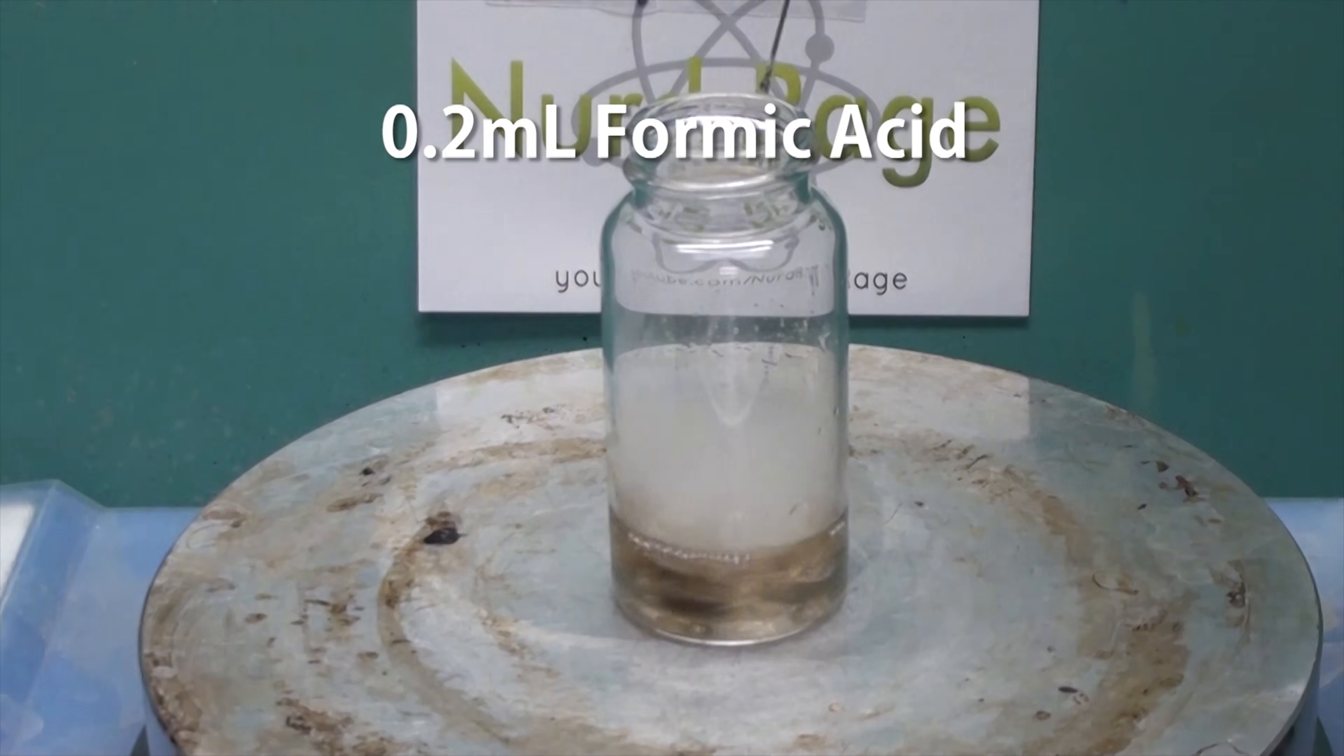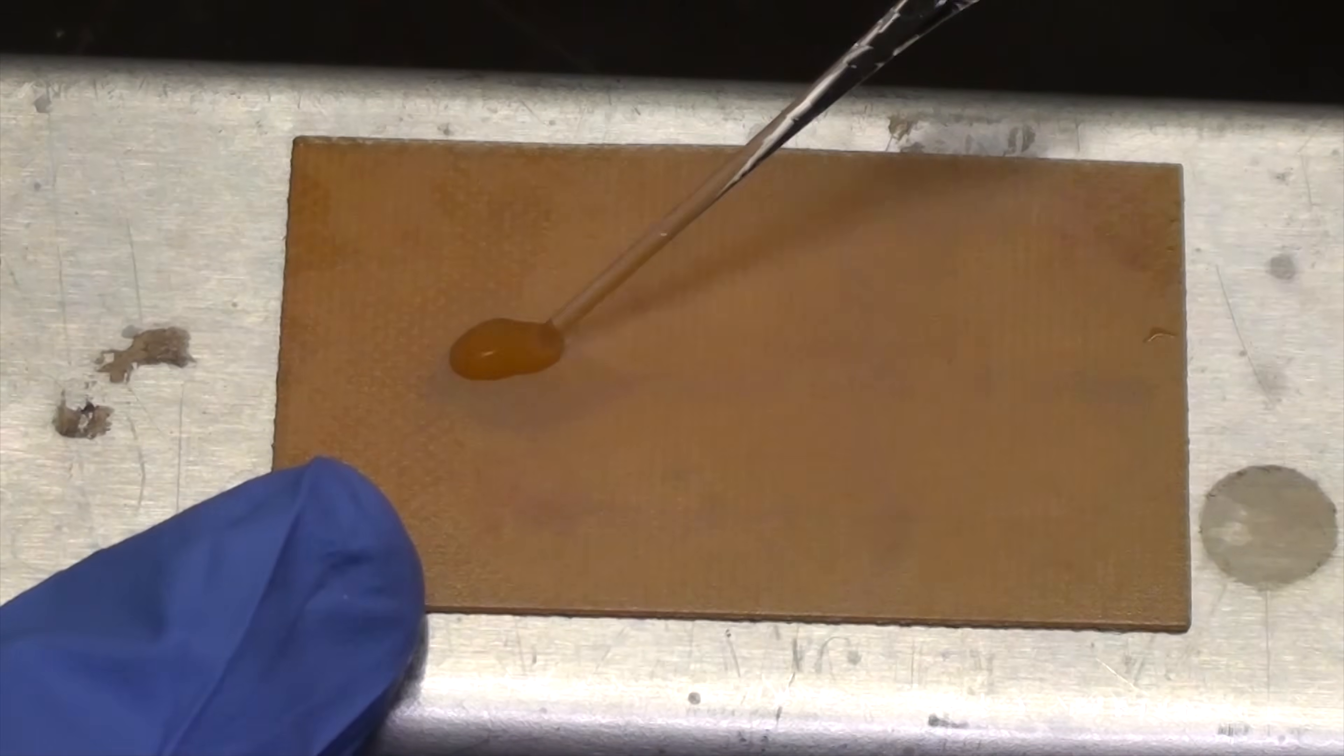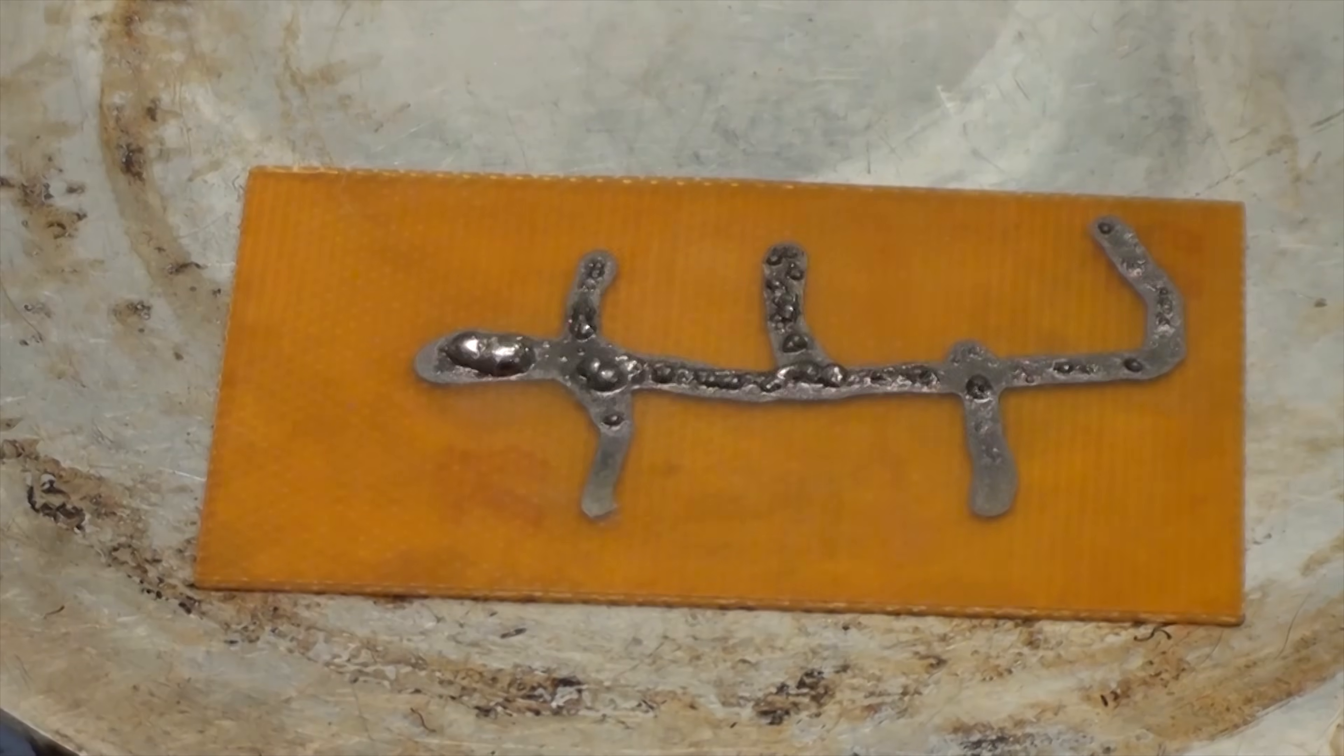Greetings fellow nerds. Some years ago I showed how to make silver conductive ink, and one of the key ingredients was formic acid.